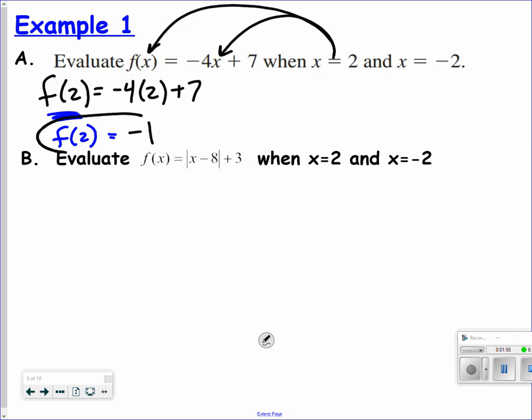So negative 4 times 2 is negative 8, and negative 8 plus 7 is negative 1. So the answer to this question, evaluating f of x when x is equal to 2, when f of 2, then you get negative 1. This tells me what number I'm putting in and what number I'm getting out. I put in a 2 and I got a negative 1.